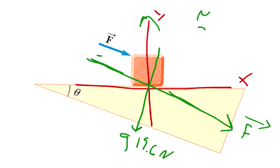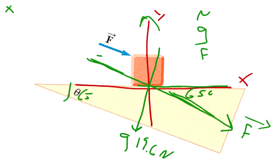So we have: the normal force, gravity, and this unknown force F. We need to quantify how they act in each direction. For all the x-components: we know this is 65 degrees, and that angle right here is also 65 degrees. We can describe the x-component of F using the adjacent over hypotenuse relationship — that's cosine — so F times cosine theta is our first x-force, x1.